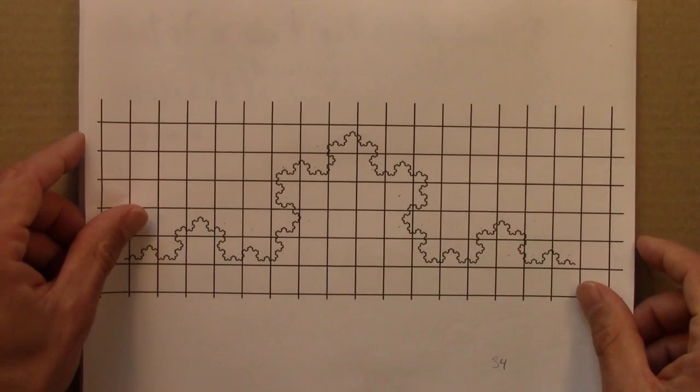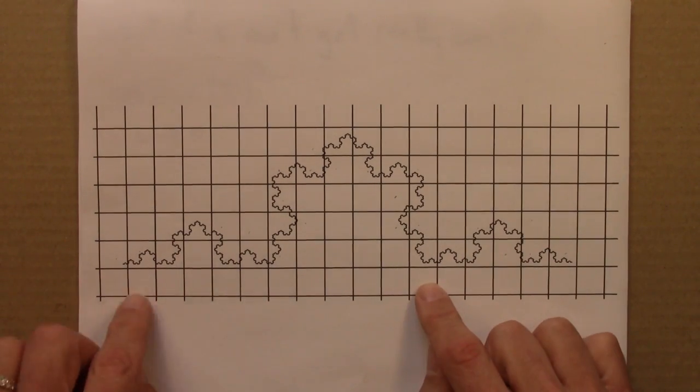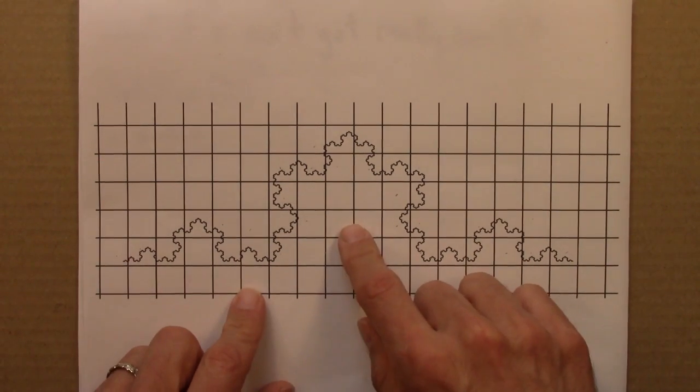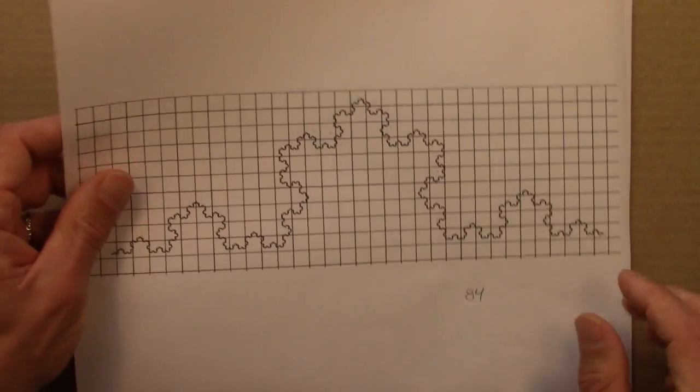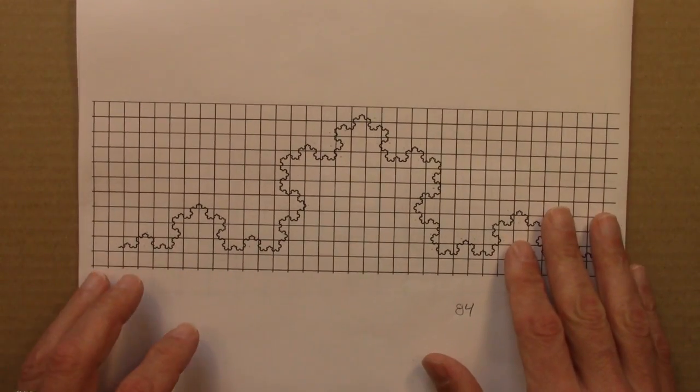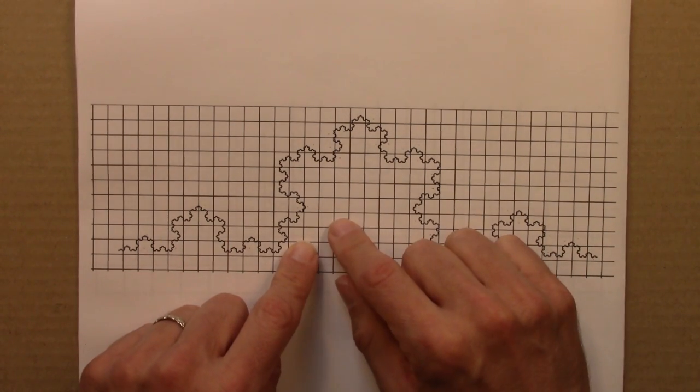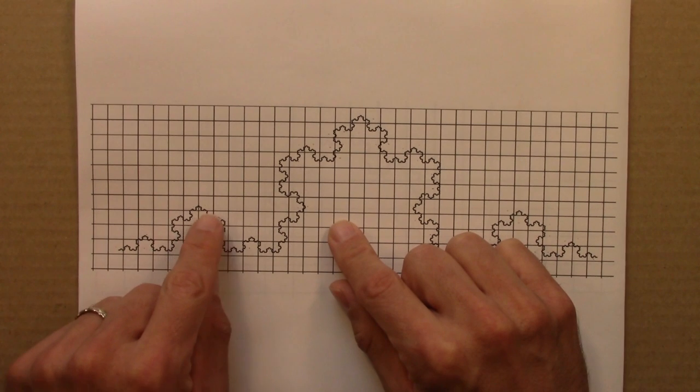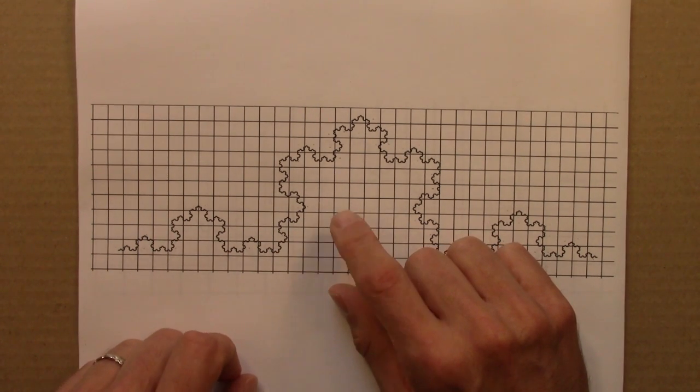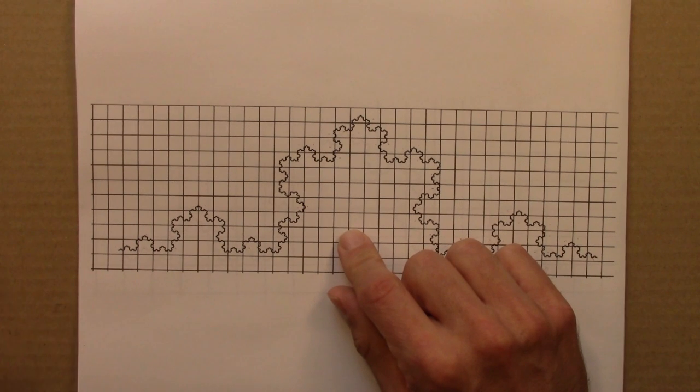For the Koch curve, I started with boxes like this and counted, or you did on the last quiz actually. Then you can let the boxes get smaller, and smaller still and smaller still. At some point, counting them individually with your fingers becomes far too tedious. But we could get a computer to do it for us.